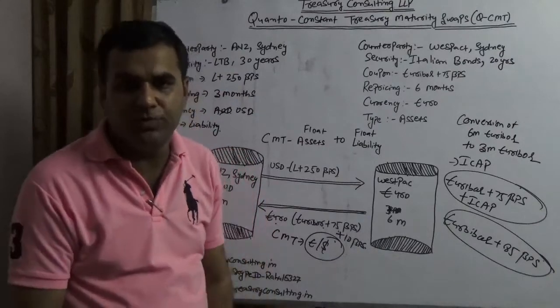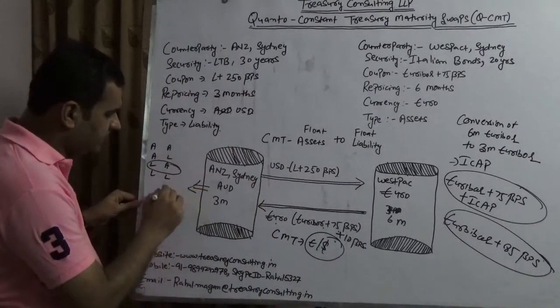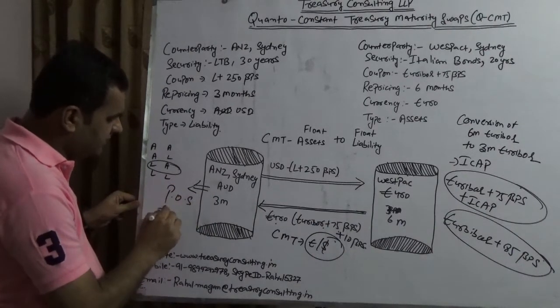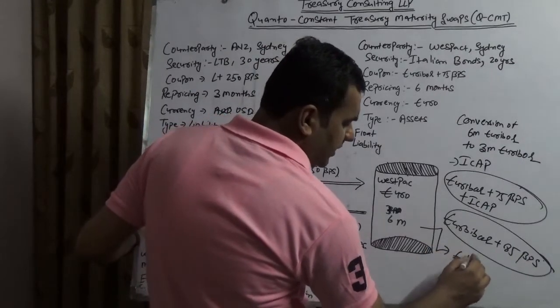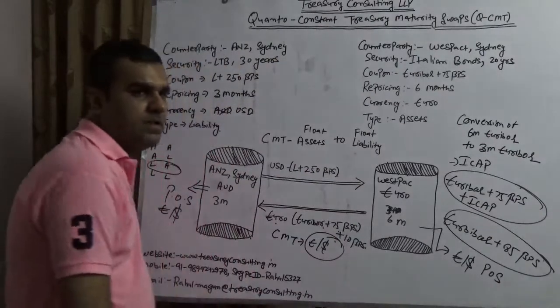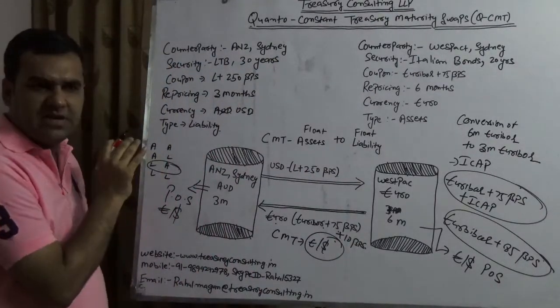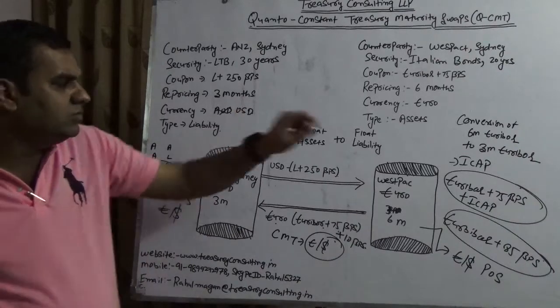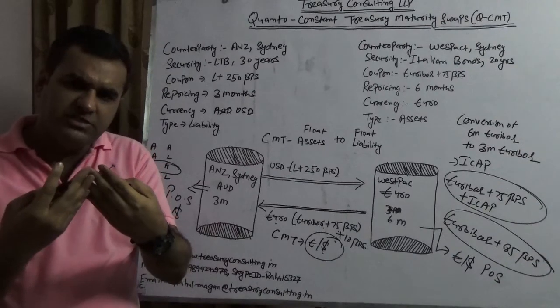If you do not have that, then again the same question would be emerging - ANZ Sydney have to do the principal only swap, which is Euro-dollar. And Westpac again have to do the Euro-dollar principal only swap if they do not have that. But this way, one party who always have a liability, another party who has an asset, can mitigate the flows by talking to each other.